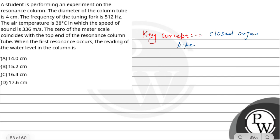We have a student performing an experiment with a column tube. This is a closed organ pipe setup. At the top of the resonance column tube, one side is closed and one side is open.